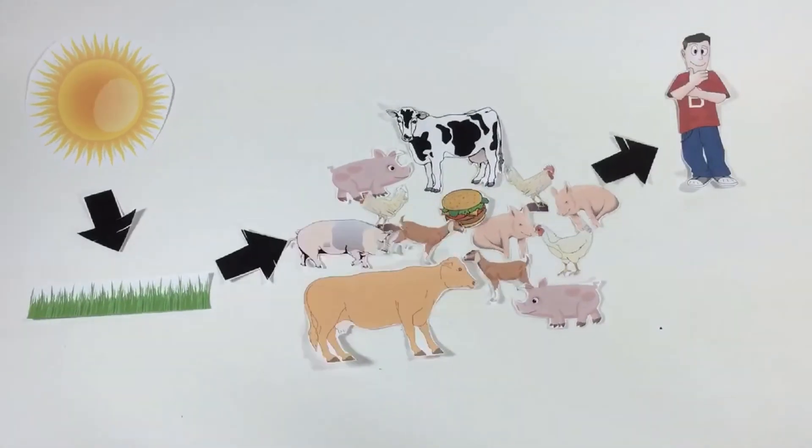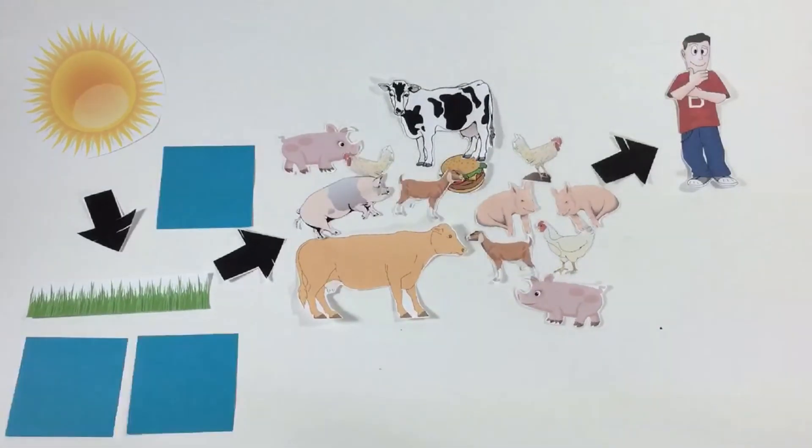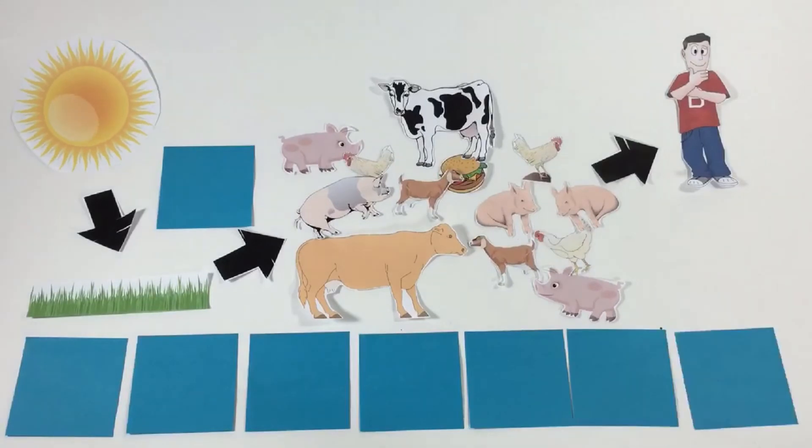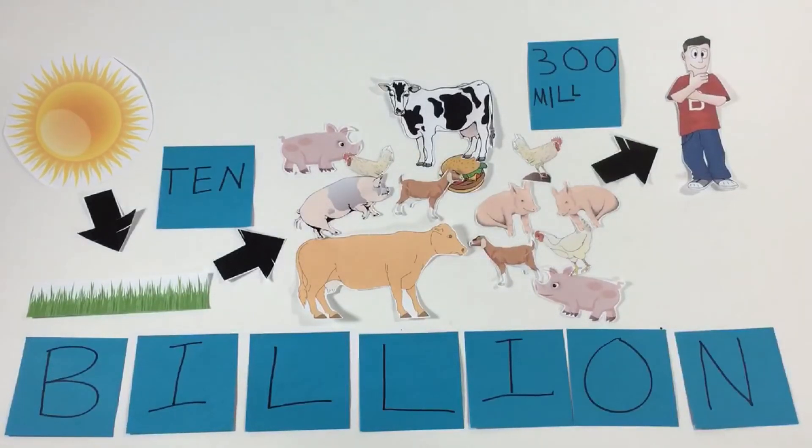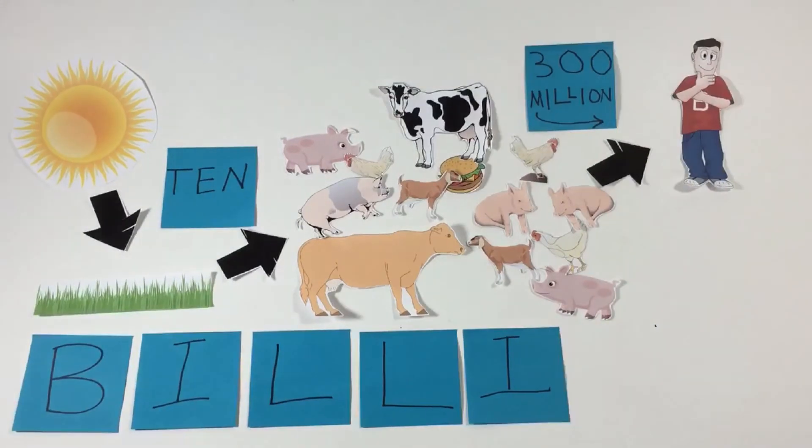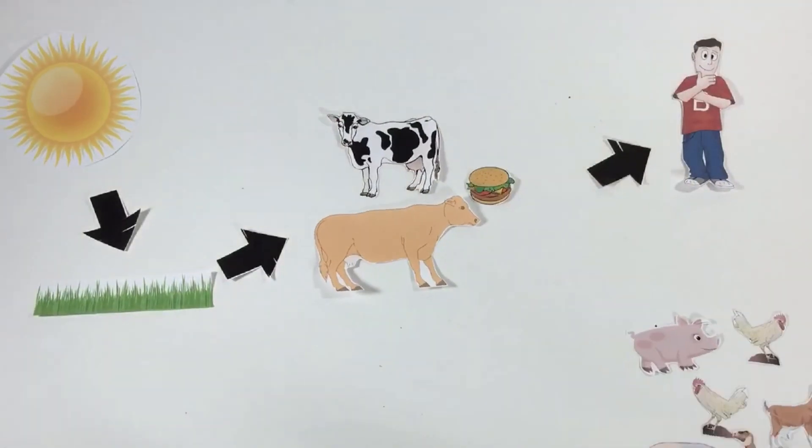In fact, can you guess how many animals are slaughtered for food every year in the United States? If you guessed 10 billion, you were correct. 10 billion animals to support just 300 million humans. Do you notice a pattern?